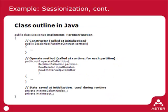At a high level, the function in Java will have a class called 'sessionize'. We want it to be a partition function, so we need to implement the partition function interface. We need a constructor that takes in the runtime contract — called at initialization. Then, as part of implementing the partition function interface, we need an operateOnPartition method, called at runtime for each partition. For user one, two, three it will be called with all clicks for that user; then separately for user four, five, six, and so on.